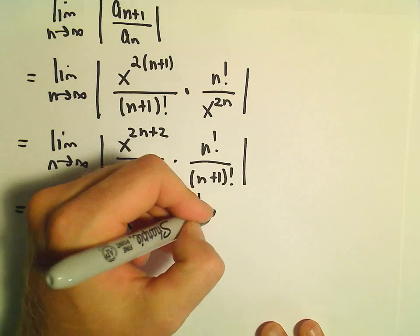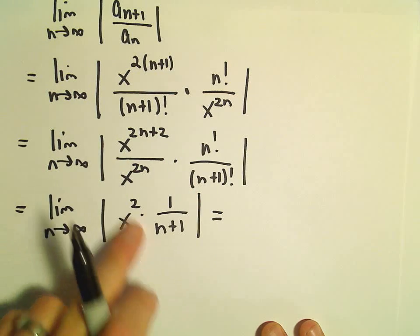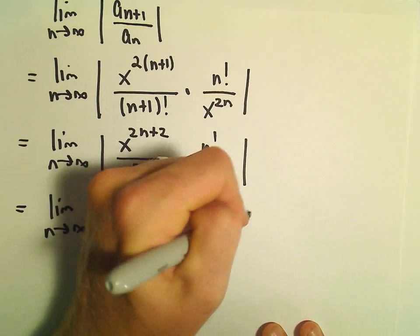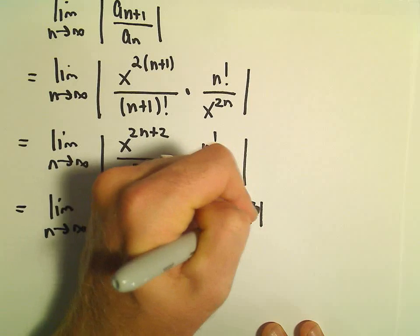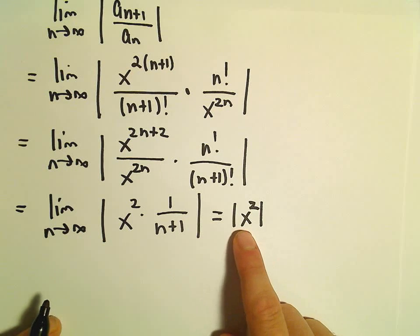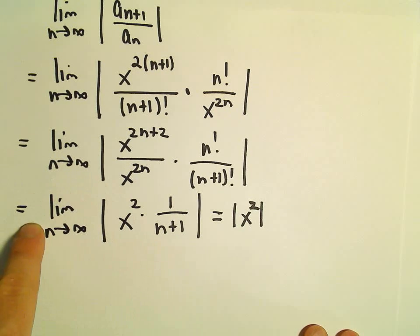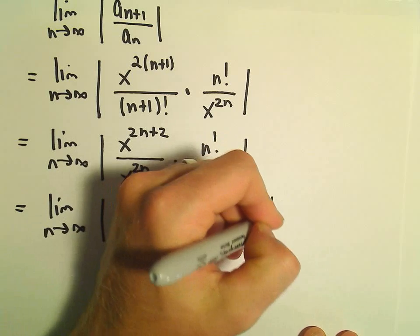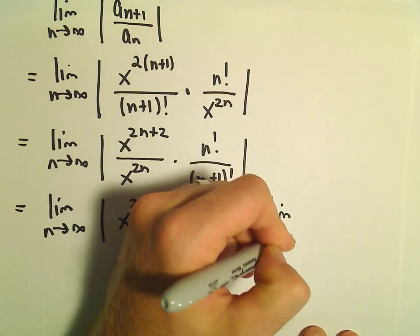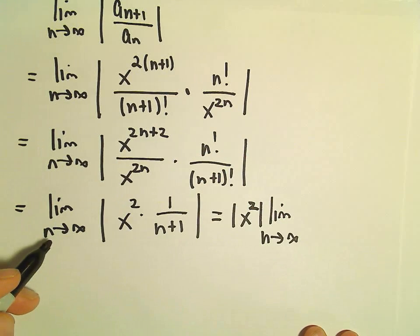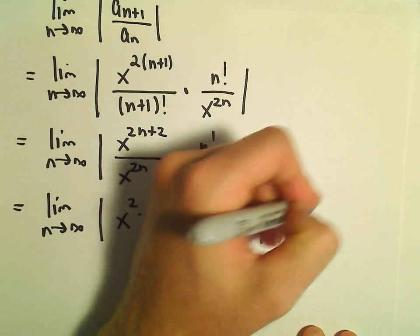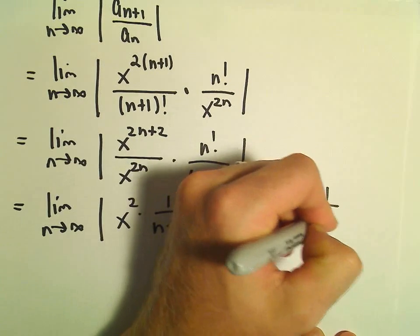And in this case, you can treat the x like a constant. So we can pull it out. Technically you need to keep things in absolute value. Here you're squaring it so it really doesn't matter. But just as a force of habit, I would say when you bring constants out, keep them in absolute value. So we've got the absolute value of x squared times the limit as n goes to infinity of 1 over n plus 1.